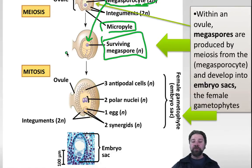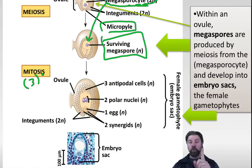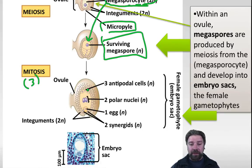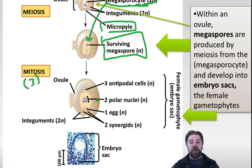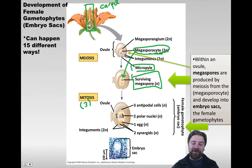Of those four cells produced by meiosis, there will be one surviving megaspore. That surviving megaspore then goes through three mitotic divisions: one cell to two, two to four, and four to eight. Looking at those eight cells: three are called antipodal cells, sitting at the top of the inside of the ovule; there are two polar nuclei in the center, which are haploid; and there is one egg sandwiched between two synergids - supportive cells that help pollen reach the right place. This is what we call an embryo sac.